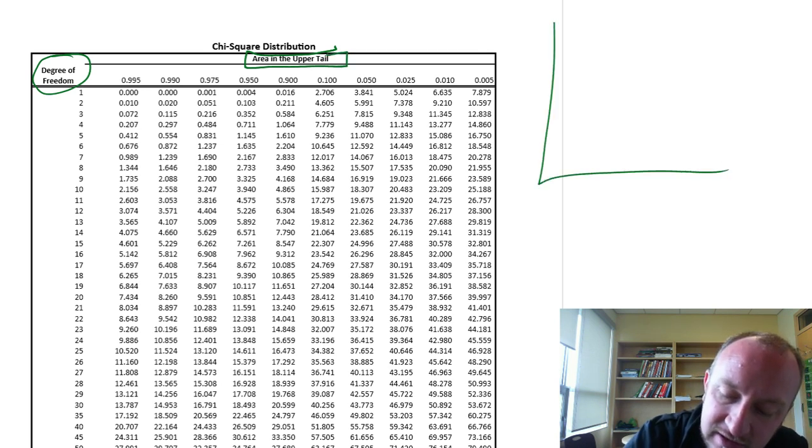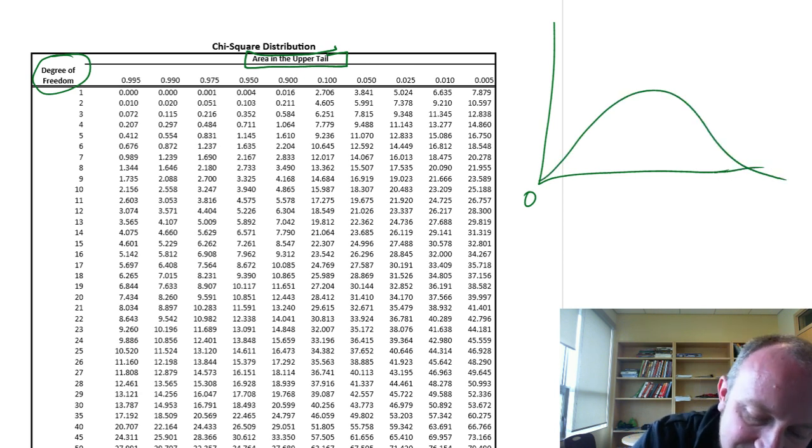So if I consider a distribution that looks something like this, for any of these values, let me just pick one, we have 29 degrees of freedom. So all of these values here, let's take this one here.